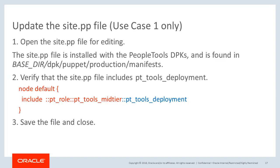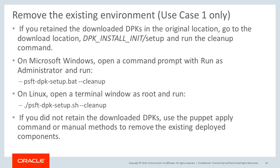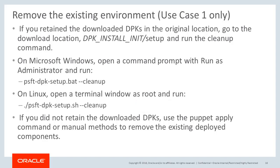To update the site.pp file, open the site.pp file located in the base directory dpk/puppet/production/manifest. Verify that the file includes pt.tools.deployment, then save and close. For use case 1, you also need to remove the initial environment. If you retain the downloaded DPKs in the original location, go to the downloaded location setup directory and run the cleanup command. The cleanup commands for Windows and Linux are shown here. If you did not retain the original downloaded DPKs, use the puppet apply command or manual methods to remove the existing deployed components.